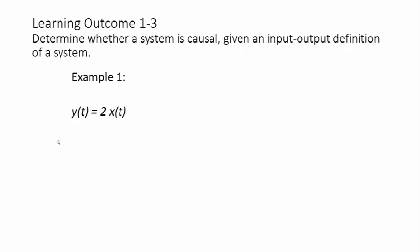Let's work through an example. Again, this is an input-output definition of a system because we have x(t) and y(t) in our equation. Is this system causal? If you look at these time arguments, t is less than or equal to t. This system is causal.